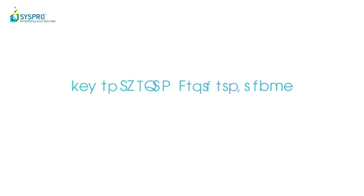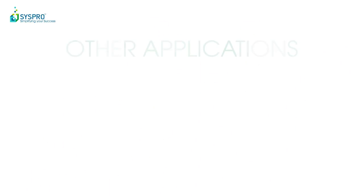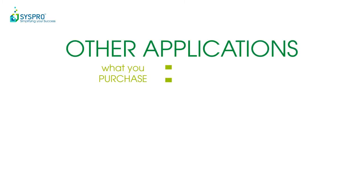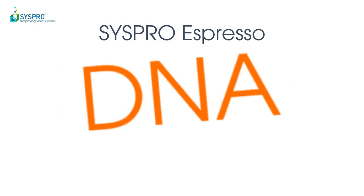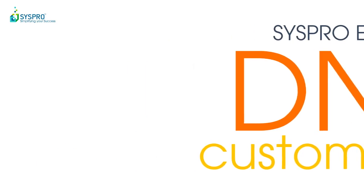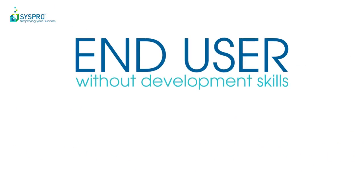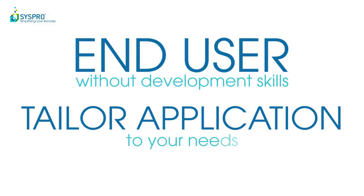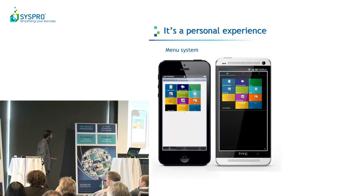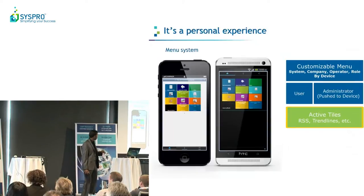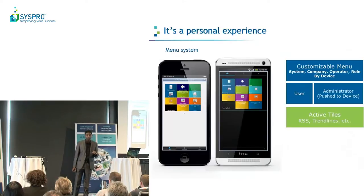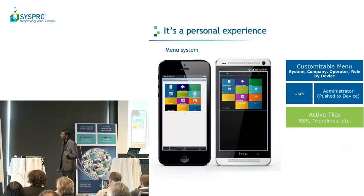The key to our fame in SysPro Espresso is our customization. In all other applications, what you purchase off the app store is what you get — if you don't like the branch field or would like to add a salesperson field, that's pretty much impossible without someone writing code. In SysPro Espresso's very DNA, we built in customization so you as an end user without any development skills can go onto your device and tailor the application to your needs. This menu is completely customizable — it has something called active tiles. You can draw charts, get RSS feeds, show latest stock prices, everything can be put on those tiles. These tiles represent an application or a piece of functionality, like a customer query, a sales order posting, or even a stock take.